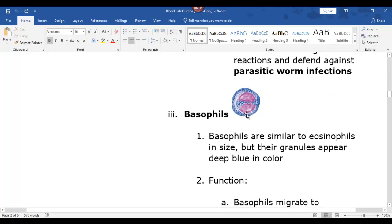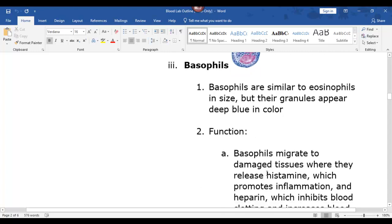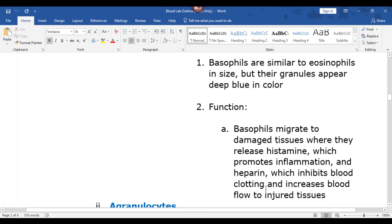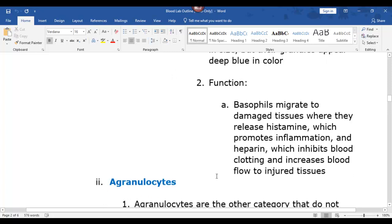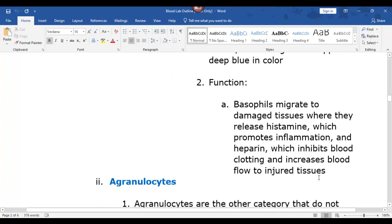A basophil—these are the least abundant of all of the white blood cells. They're less than 1%. And what they do, they cause swelling and inflammation. Right here it says they migrate to damaged tissues, they release histamine which actually causes swelling, and they also release a chemical called heparin, which is an anticoagulant, so it increases blood flow.